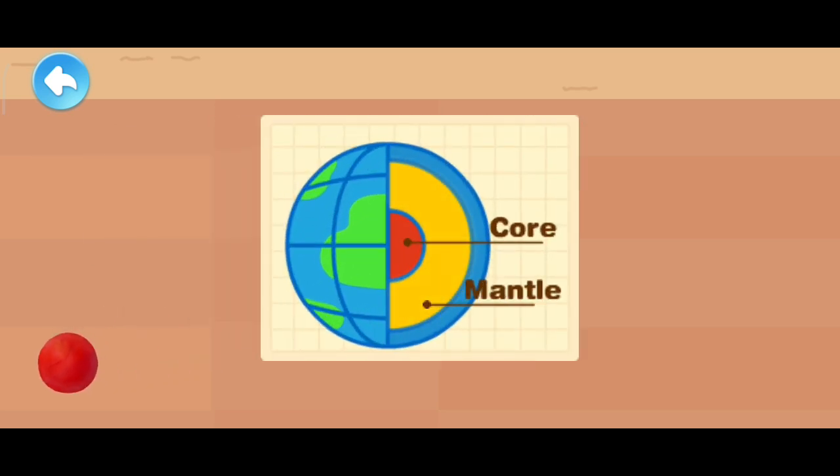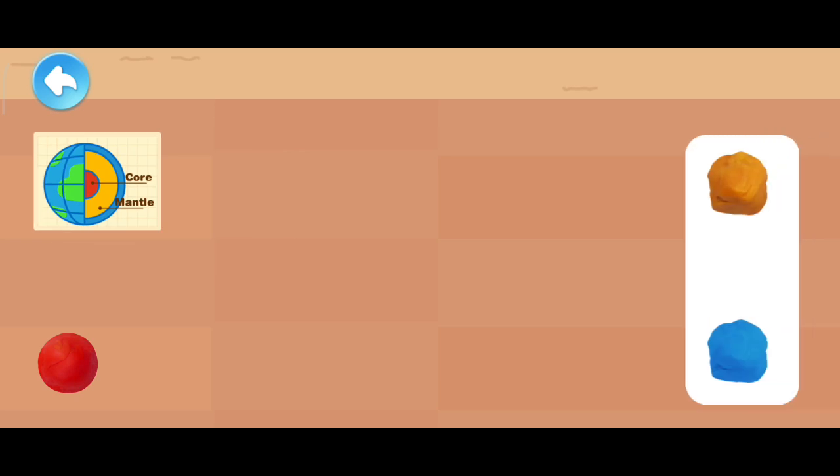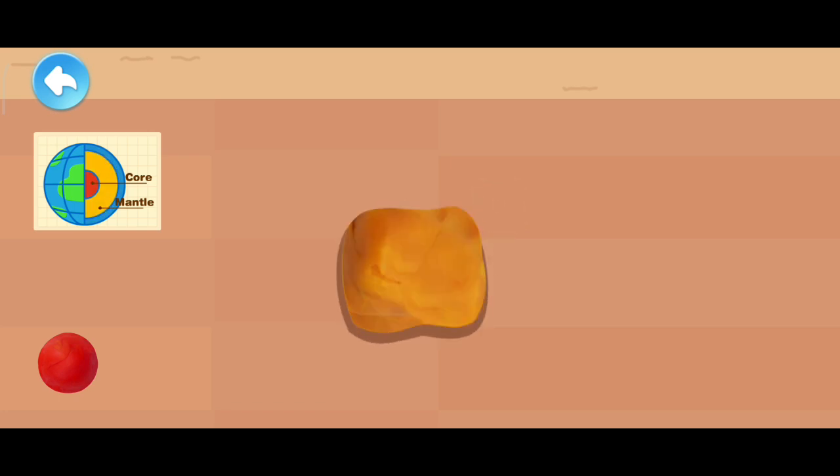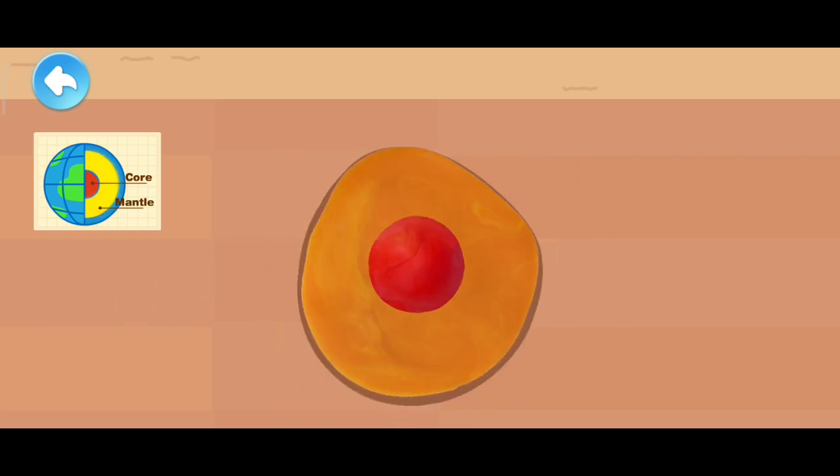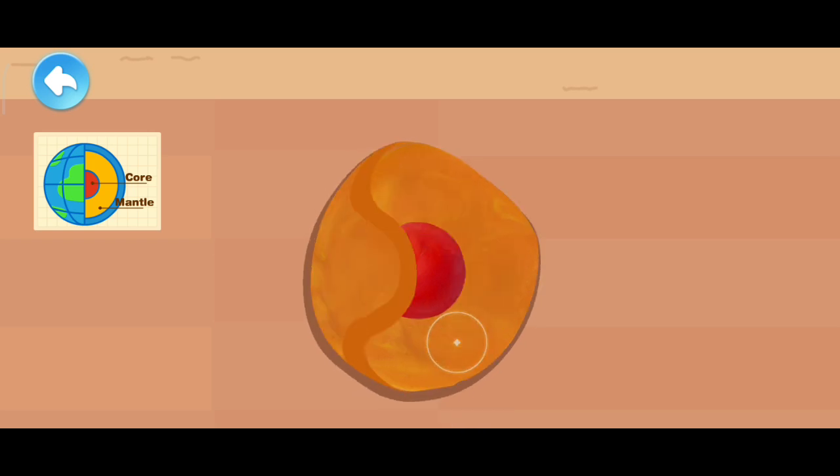Next, let's make the mantle. Which color should we use for the mantle? The mantle consists of very hot magma. Use the rolling pin to make it flat. The mantle should be wrapped around the earth's core.